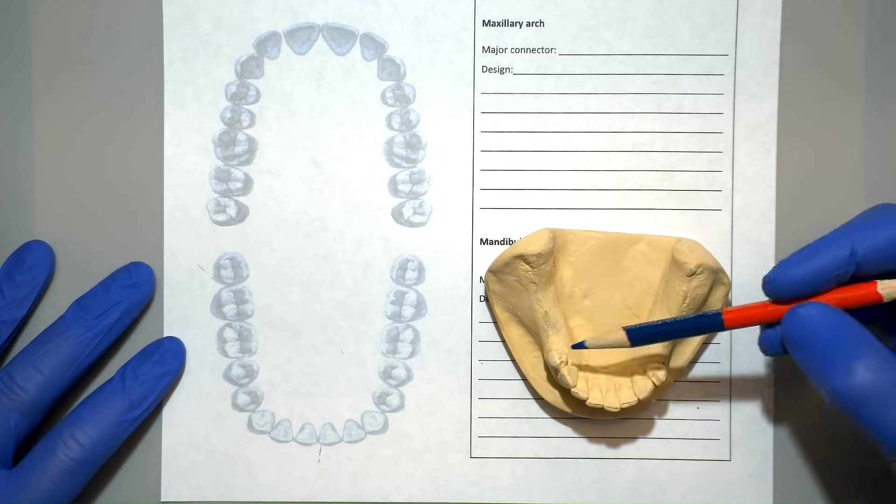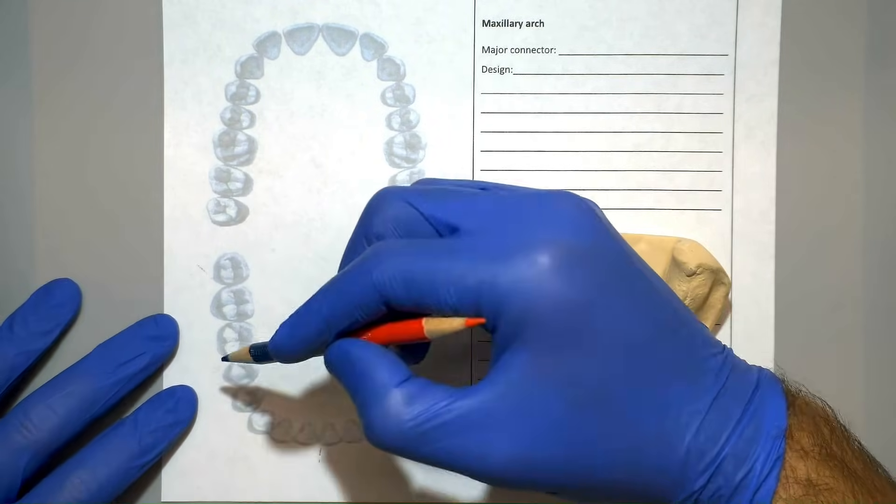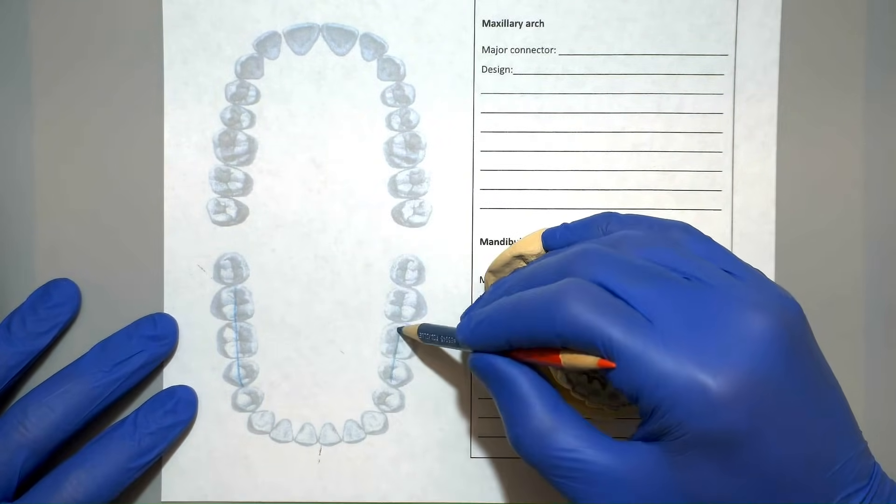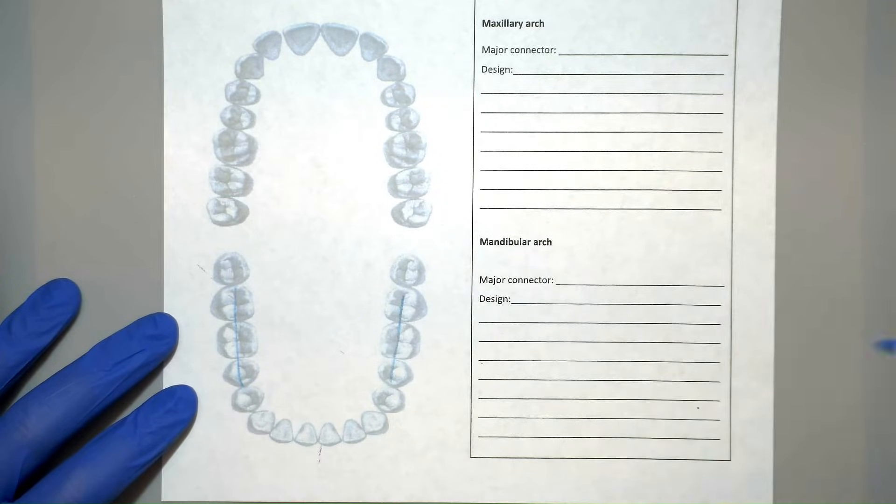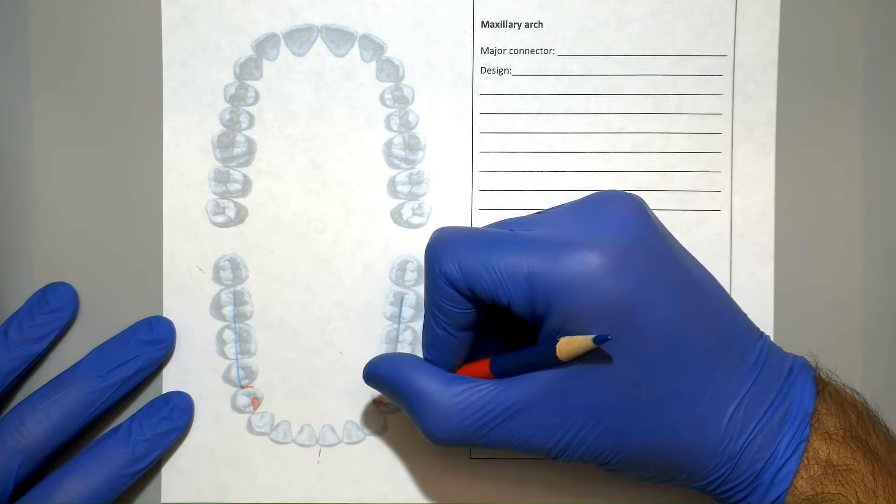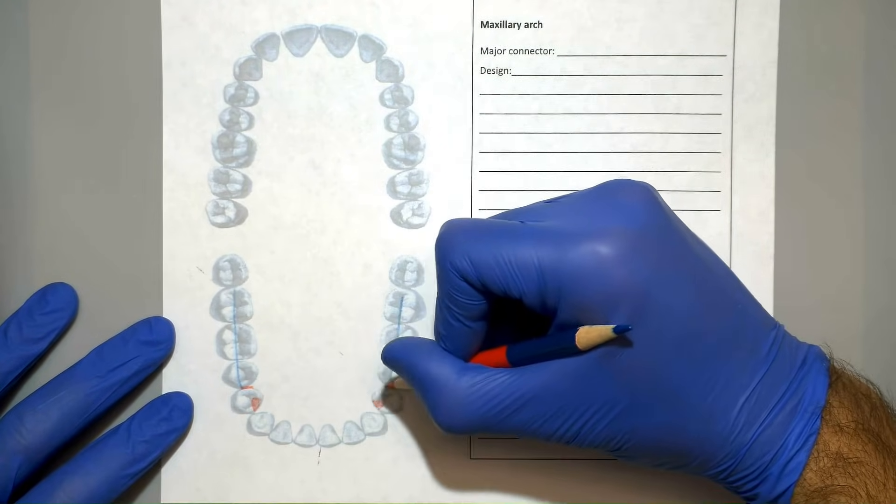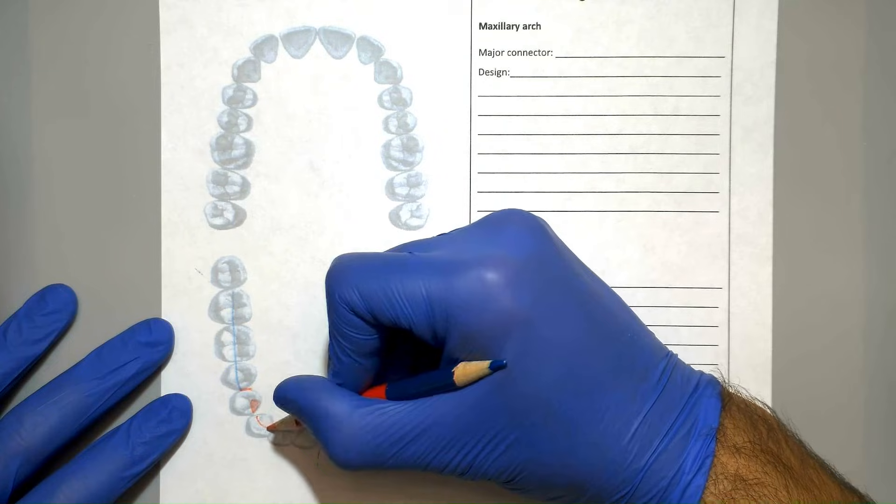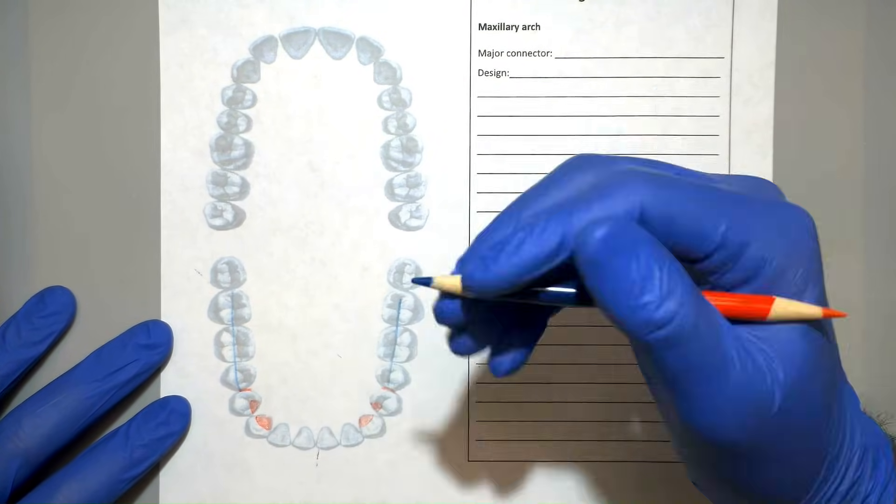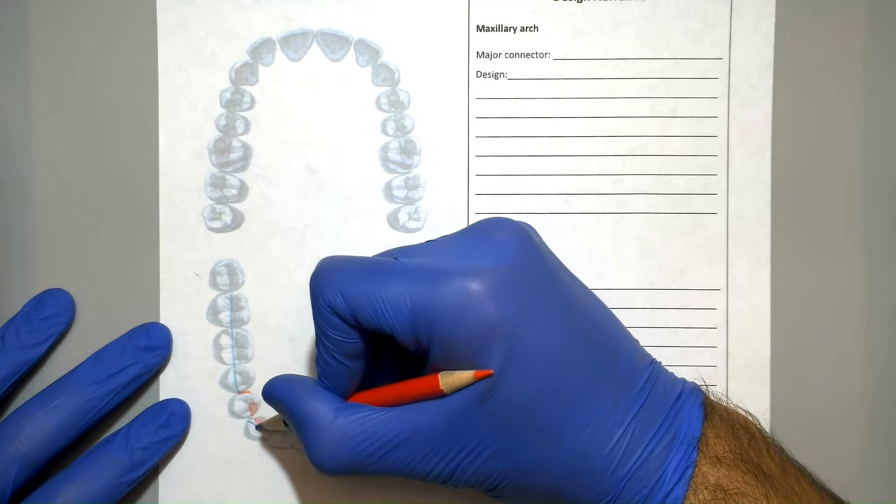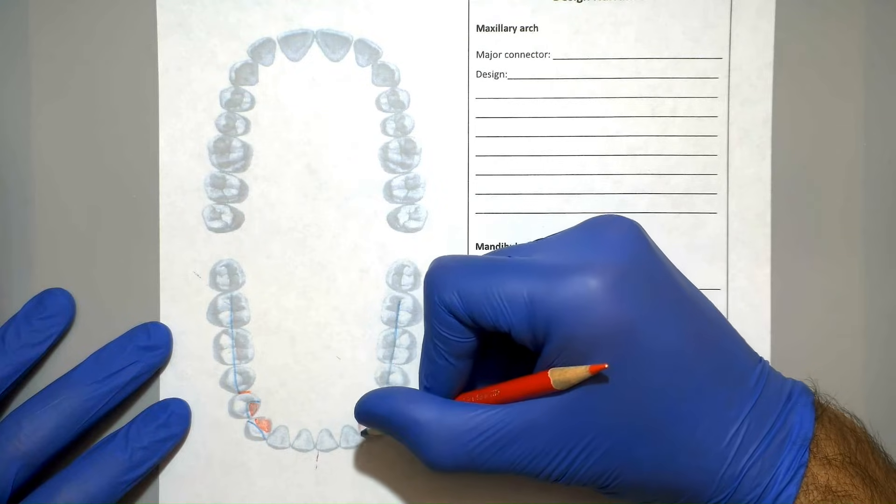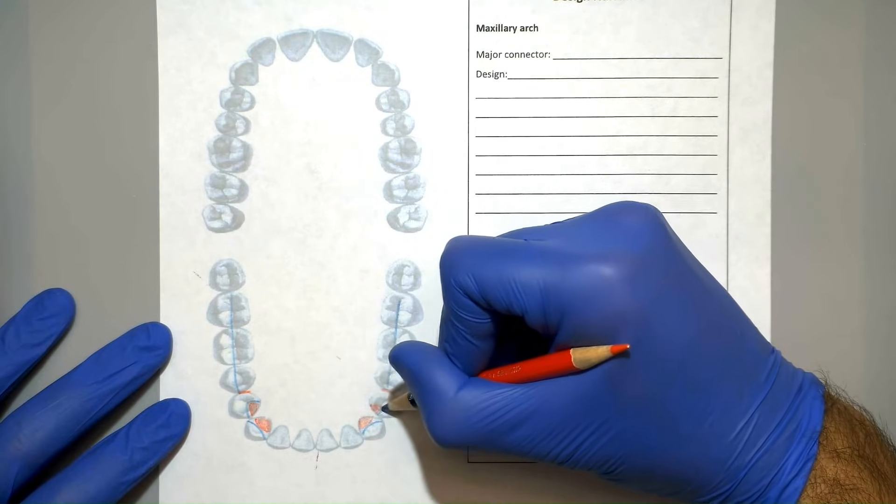Now we're going to go ahead and draw our design on paper. I use the cast to identify which teeth are missing and mark them with a blue line going through the center of the missing teeth. I'll now use the red side of the pencil to draw all the different rest seats on all the teeth. I'll add red lines representing guide planes on the distal surfaces of the premolars. I'll now go ahead and switch over to the blue side of the pencil and I'll outline each red rest seat with a blue outline representing the rest.